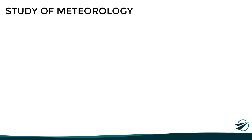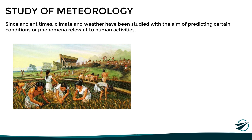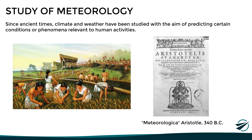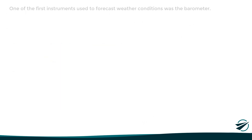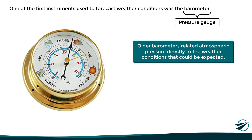Atmospheric conditions have a significant impact on human life. Since ancient times, climate and weather have been studied to predict conditions relevant to human activities such as agriculture. The importance of this study dates back to 340 BC, with the publication of Meteorologica by Aristotle, where there was already speculation about the factors influencing atmospheric conditions. Later, with advances in technology, different instruments and techniques began to be used to evaluate and predict the weather. One of the first instruments used was the barometer, which is essentially an atmospheric pressure gauge.